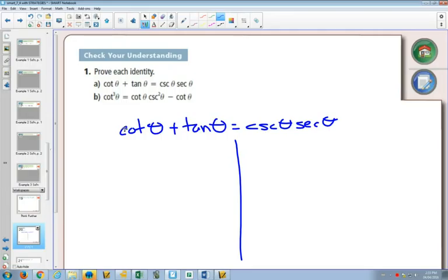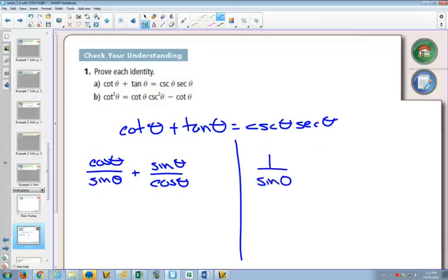So changing things to sine and cos, cotangent will be cos over sine. Tangent will be sine over cos. Secant is 1 over sine—and sorry, cosecant is 1 over sine and secant is 1 over cos. So when I multiply the right-hand side together, I already have a single fraction.